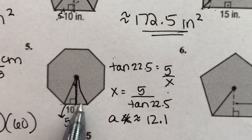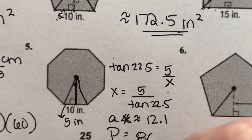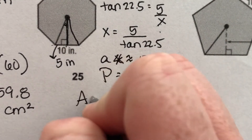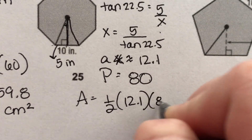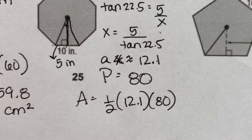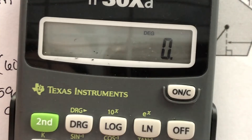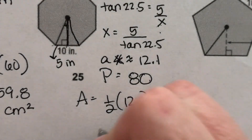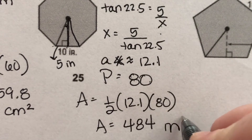The perimeter: one side is 10 and there are 8 sides, so that's 80. I have my apothem and perimeter, so I plug into the area formula: one-half times the apothem times the perimeter — 12.1 times 80 divided by 2 equals 484. Area equals 484 square inches.